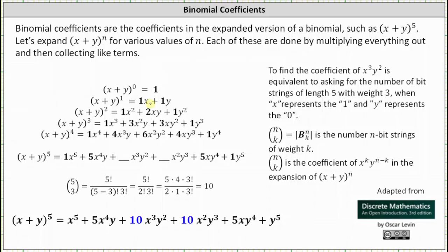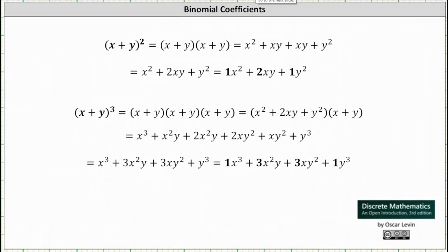Now let's look at the square of x plus y and the cube of x plus y. For the square of x plus y we have two factors of x plus y and then we multiply — you may know this as the foiling process, or we can think of it as a double distribution, where we distribute the x from the first binomial and then the y. This gives us x squared plus 2xy plus y squared, with all coefficients emphasized.